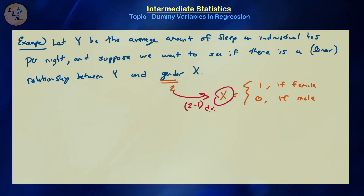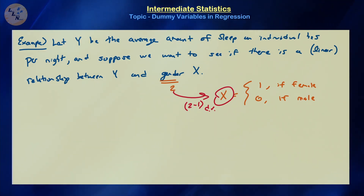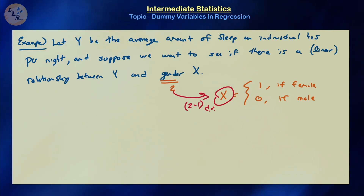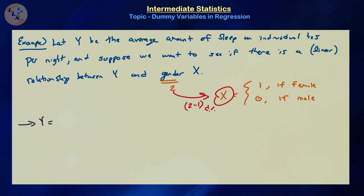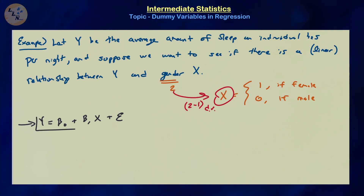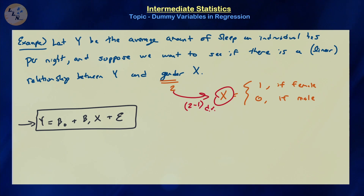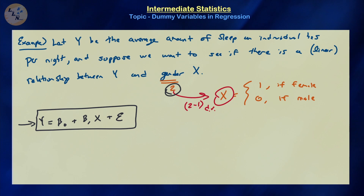If you want to include more than two categories — for example female, male, and other classifications — you would include k minus one dummy variables. Our model is simply y equals beta zero plus beta one x plus epsilon: a simple linear regression model. Since we're working with two categories, we have one variable, and keep in mind this is a dummy variable that can only take the two discrete values 0 and 1.